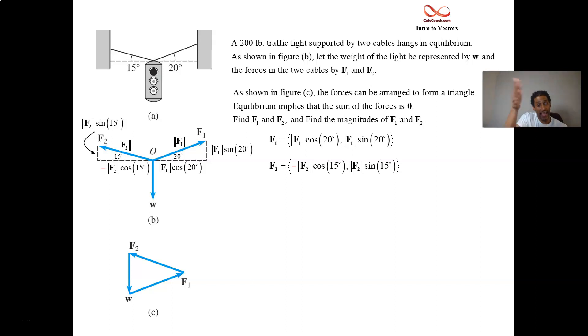If you add F1 and F2, you'll get the opposite of W. So add W to both sides. It's the sum of all three vectors equal to zero. That bolded zero is the zero vector.